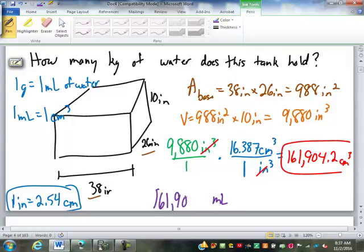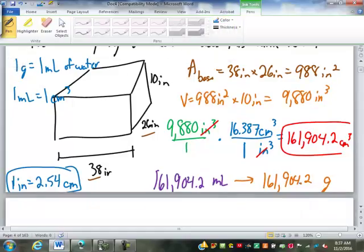How many milliliters is that going to be? Perfect. Exact same because one milliliter is one cubic centimeter. And of course, that's going to be how many grams? The same. So to turn that into kilograms, grams to kilograms is three spots to the left on the chart. That's 161.9 kilograms of water.